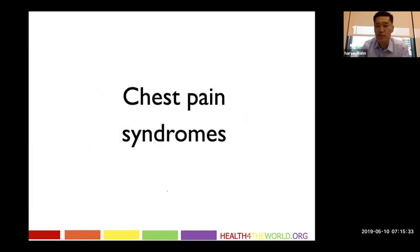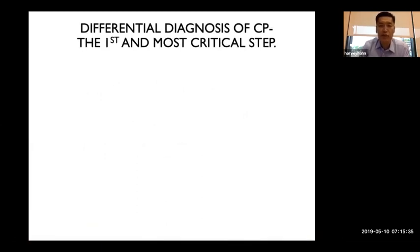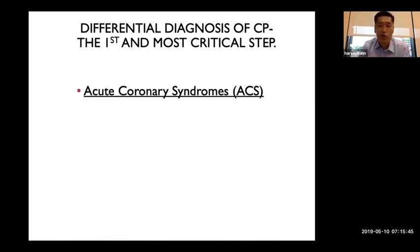The first critical step is taking a history from the patient to determine what kind of chest pain they have. You can have acute coronary syndrome, and the biggest one is what we call ST elevation myocardial infarction, or STEMI. Based on the EKG, if you have ST elevation, that means the artery is totally closed and you need to try to get it back open.